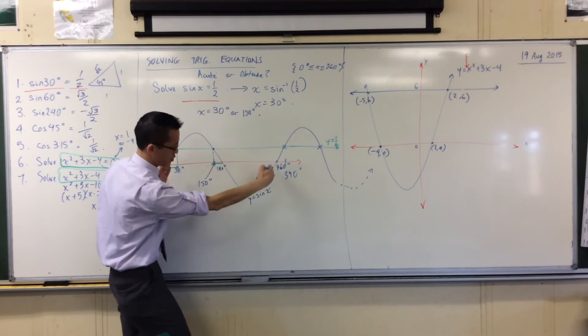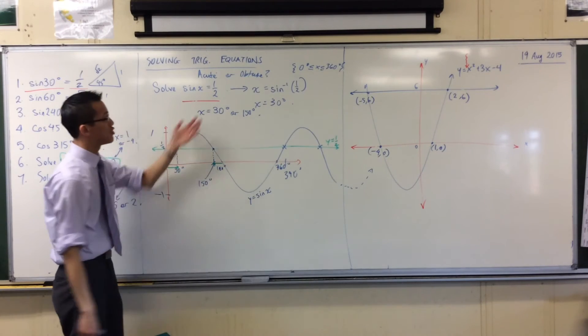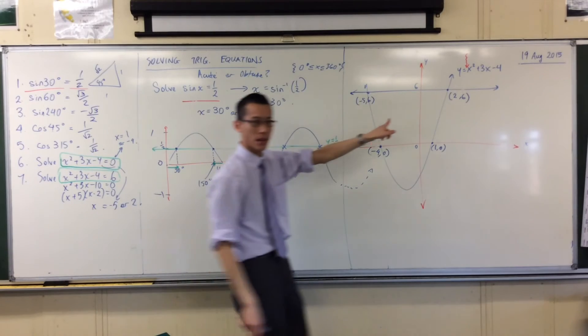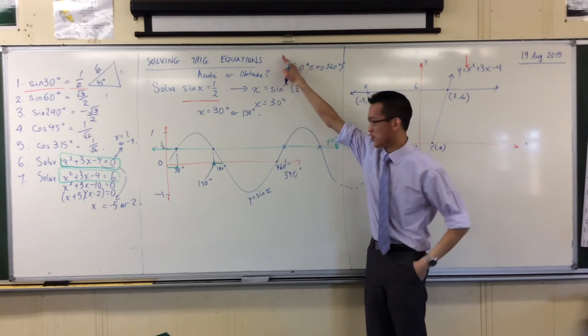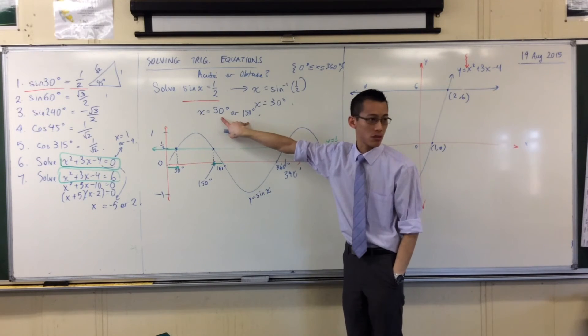They might say something like, can you give me the answers from 0 to 360? That's this range. How many answers will you find in here? You generally will find a pair, just like this, just like our quadratic. So this idea of solving trig equations by thinking of a graph, and that's how you end up with more than one solution.